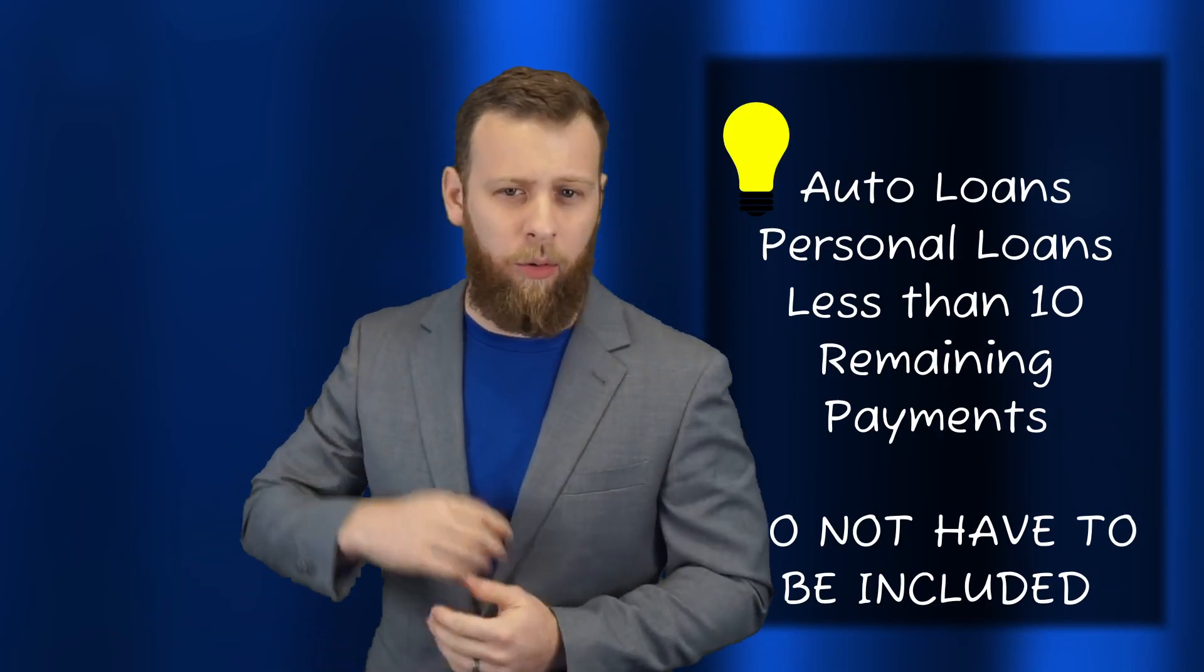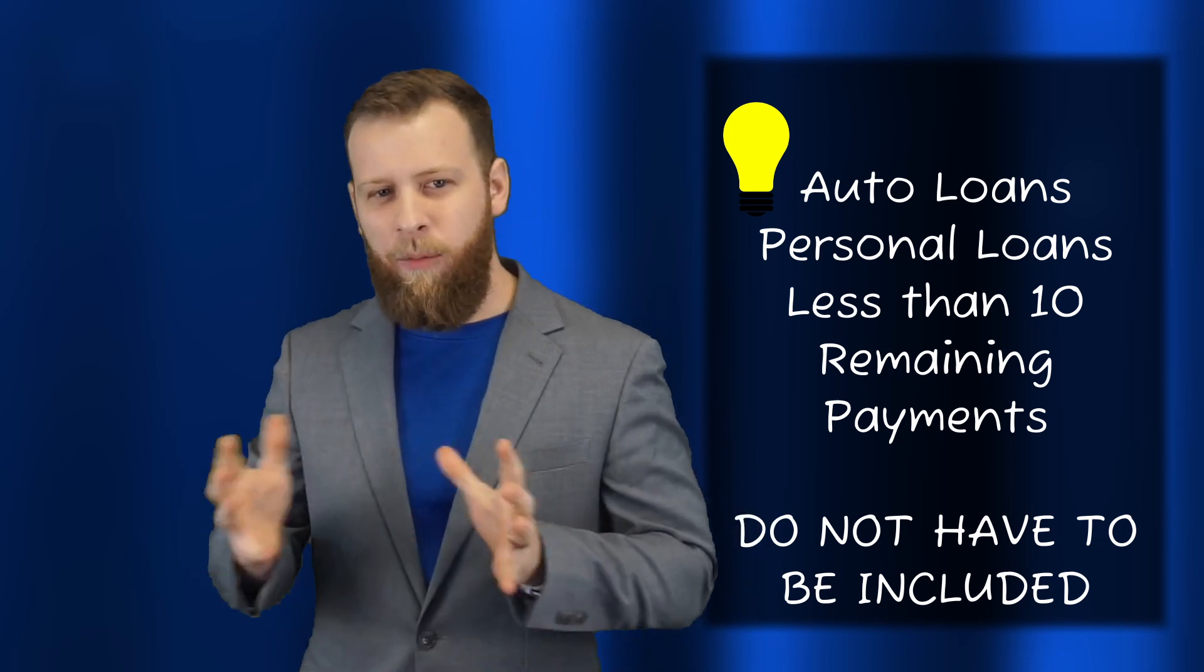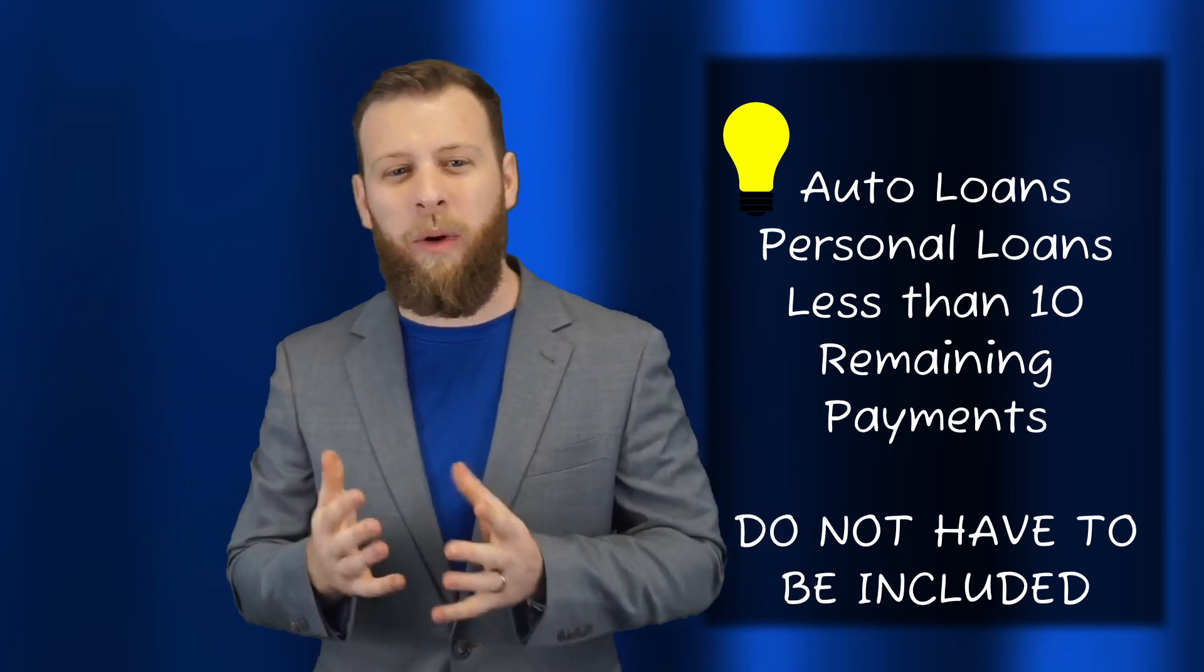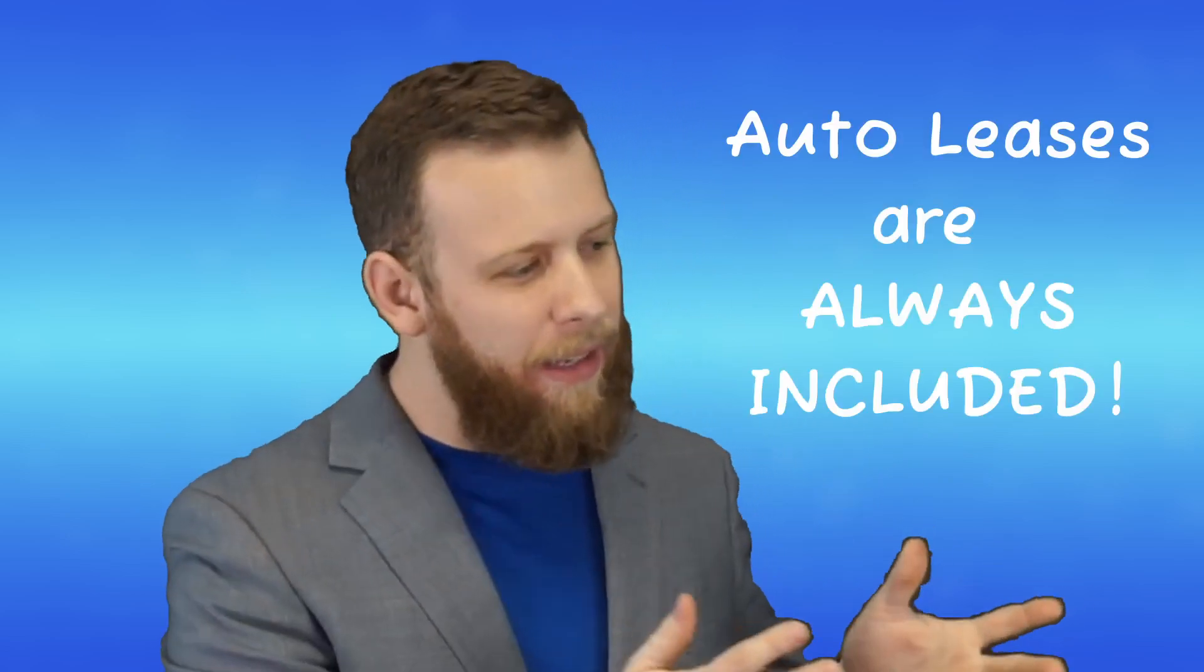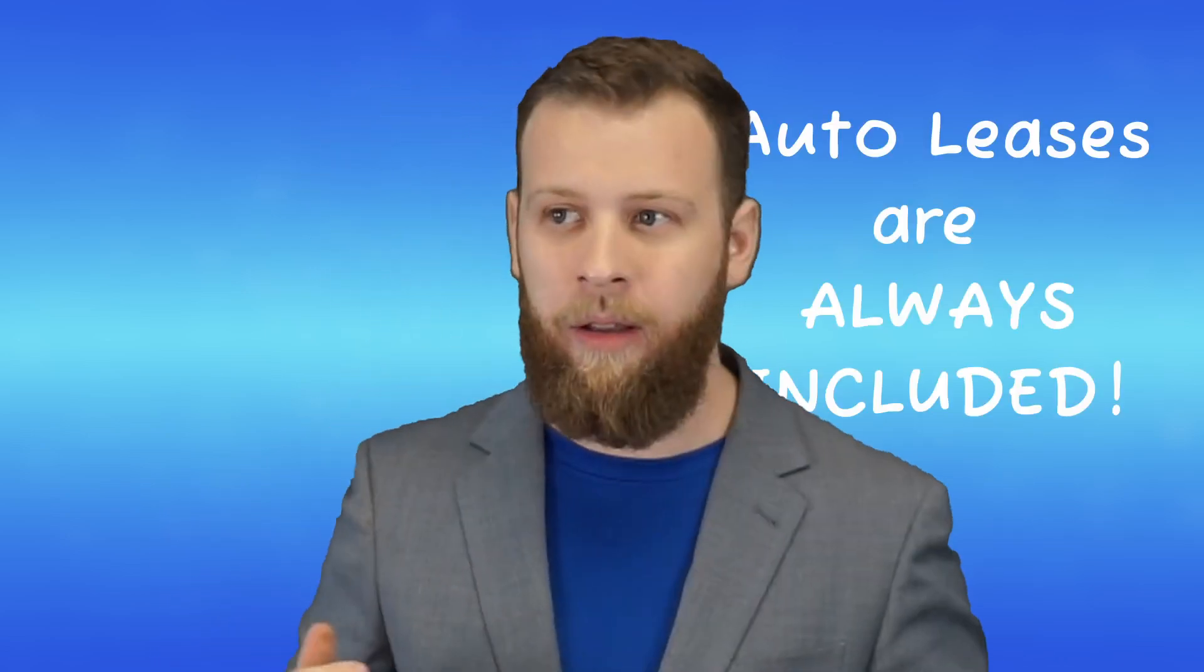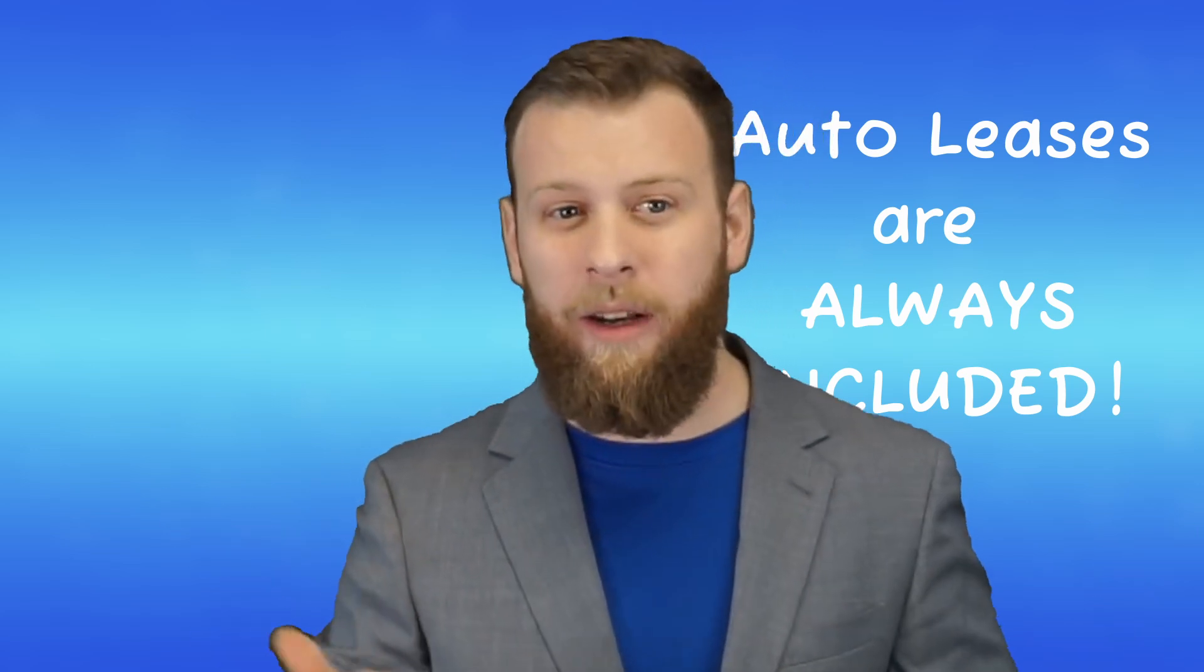Next, installment debts like a car loan, student loans, personal loans, any time we have any of those with less than 10 payments remaining on them, we actually don't have to calculate those in those ratios. An auto lease, these are going to be looked at the same way. At the end of your car payment, you've got a car. At the end of an auto lease, you need to buy a car or you need a new lease.